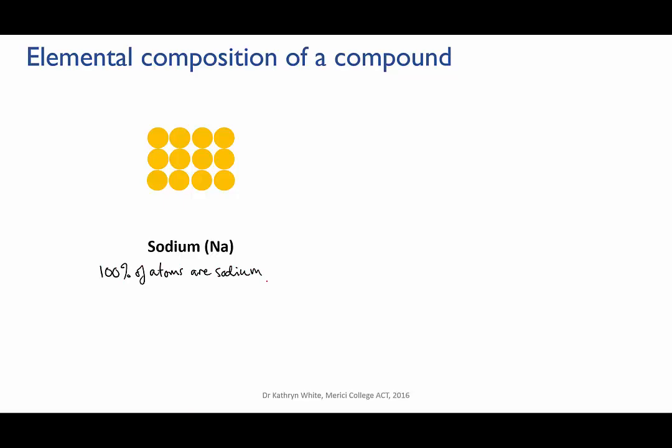But because, as human-sized creatures, it's easier for us to measure masses rather than numbers of atoms, it's often more convenient for us to think about the percentage by mass. In this case it's easy. Because all the atoms are sodium atoms, we can also say that 100% of the mass of this substance is sodium.